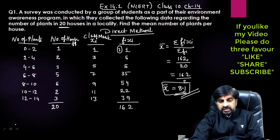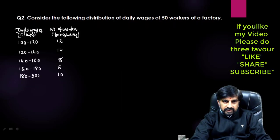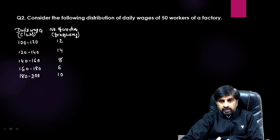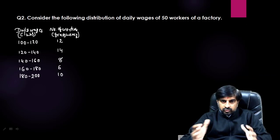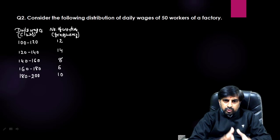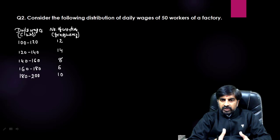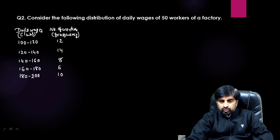Now we are going to move towards the assumed mean method. You can see here the numbers range from 100 to 120 — big numbers. Multiplying these with frequencies makes the calculation lengthy. So to reduce that, we are going to use the assumed mean method.